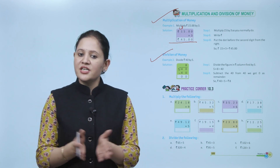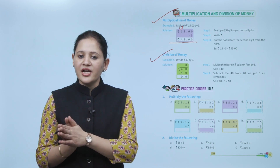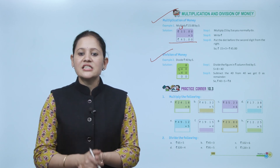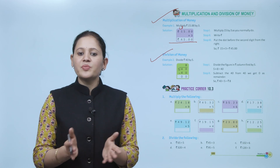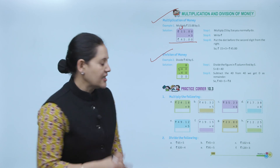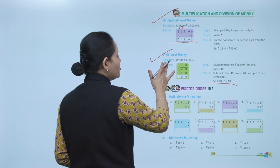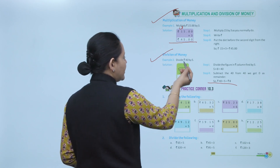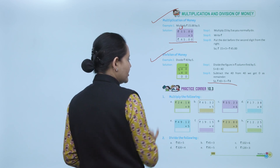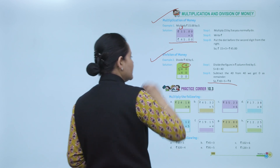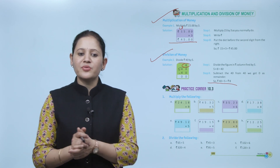Next is division of money. Divide rupees 40 by 5. Steps: divide the rupees column first by 5. 5 times 8 is 40; subtract 40 from 40, remainder is 0. So rupees 40 divided by 5 equals rupees 8. Answer is rupees 8.